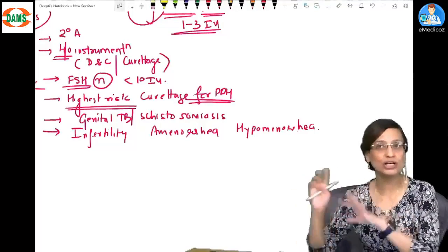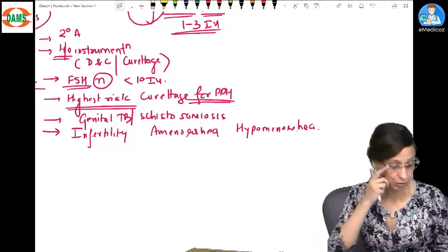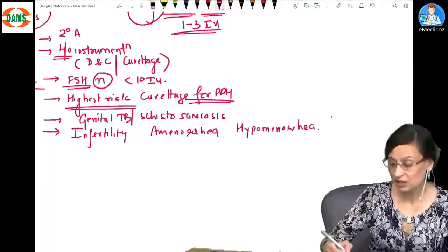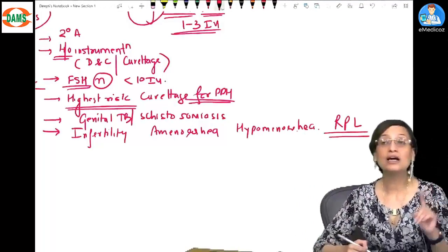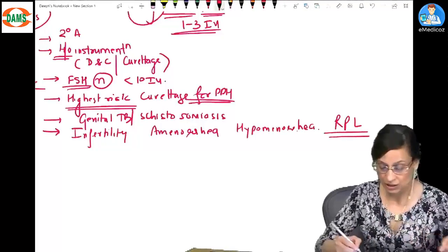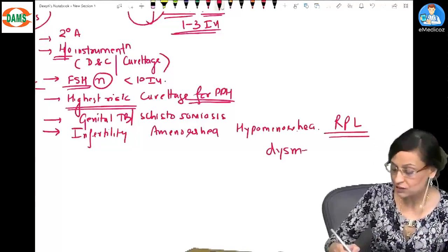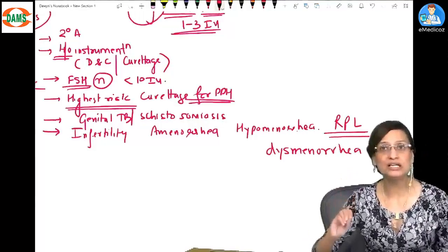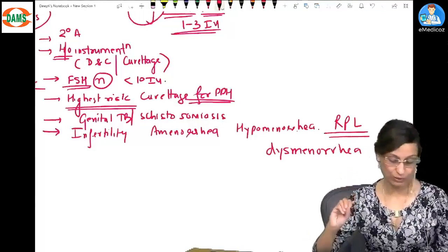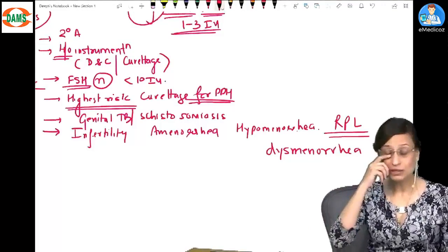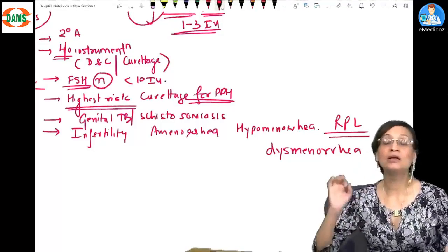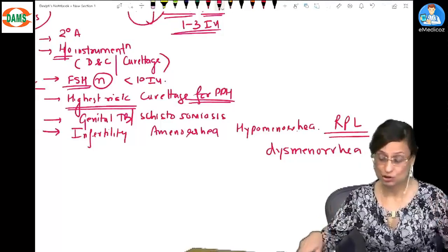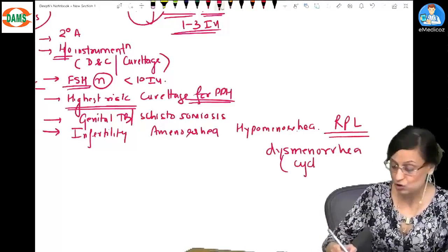Remember, it can also present as recurrent pregnancy loss. It can also cause dysmenorrhea. So you should specially know these if it is a multiple completion question. So dysmenorrhea or cyclical pain, recurrent pregnancy loss. You should know recurrent pregnancy loss, you should know that these can also be seen in women with Asherman's syndrome.